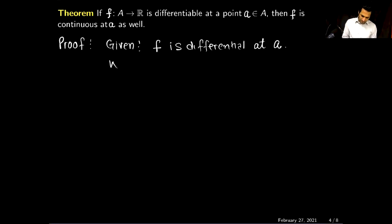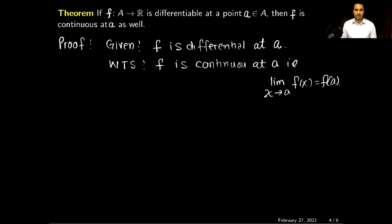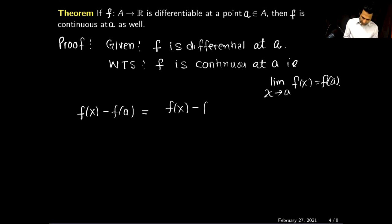Given: F is differentiable at a. We want to show: F is continuous at a, that is, the limit as x approaches a of F(x) equals F(a). I will begin by writing F(x) minus F(a) as the quantity [F(x) minus F(a)] divided by [x minus a], times [x minus a].